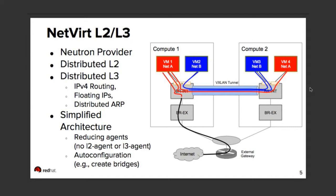Looking at a simple example where you have two compute nodes, each with two VMs on two different networks — we would have gotten information from Neutron about creating the networks, adding the ports, creating a router, and possibly some floating IP address configuration. We would then set up a VXLAN tunnel to connect these two compute nodes so the VMs can talk. We support other VLANs and GRE as well, but primarily VXLAN is used. We set up the tunnel and then set up the flows to allow them to communicate.